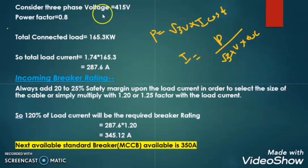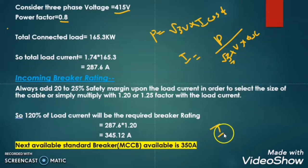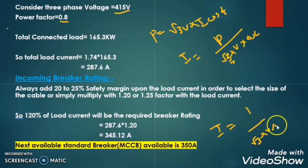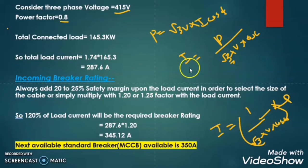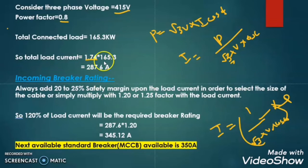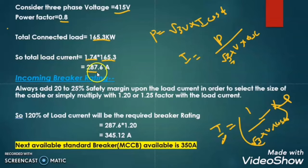Here you see that I took the fixed value of voltage that is 415V and the power factor is 0.8, and √3 is constant. So I = 1 ÷ (√3 × V × cos φ) × power. If we substitute and simplify, we get the constant 1.74. Multiplying with the total load connected, we get the total current as 287.6 Ampere.